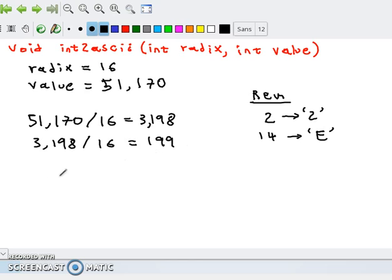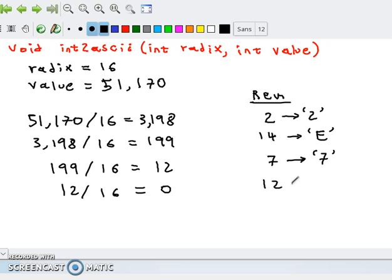Now 199 is not 0, so we keep going. 199 divided by 16. If you do the math, that's 12. And the remainder is going to be 7. And 7 just corresponds to digit 7 as a character. And finally, let's see, 12 divided by 16. That's 0. And the remainder of 12 divided by 16 is 12. And that corresponds to C.